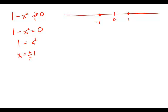If I take a number in the left region, like negative 5: 1 minus negative 5 squared is 1 minus 25, which is negative 24. That is not greater than or equal to 0. So this region does not work.